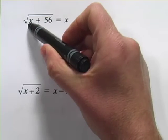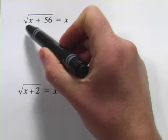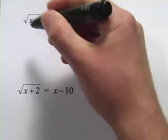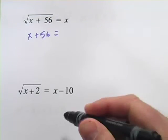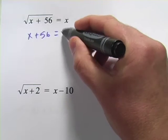Let's try that over here. If we square this side, the square root of x plus 56, when you square that, it just becomes x plus 56. When you square this side, x becomes x squared.